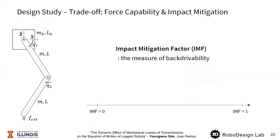Lastly, I'll show you how impact mitigation factor changes with respect to efficiency of the transmission. The impact mitigation factor is a measure of backdrivability. If the impact mitigation factor is close to 1, it's subdued to external forces and collapses naturally. But if impact mitigation factor is closer to 0, which means it's not really backdrivable, the robot would behave like a statue.